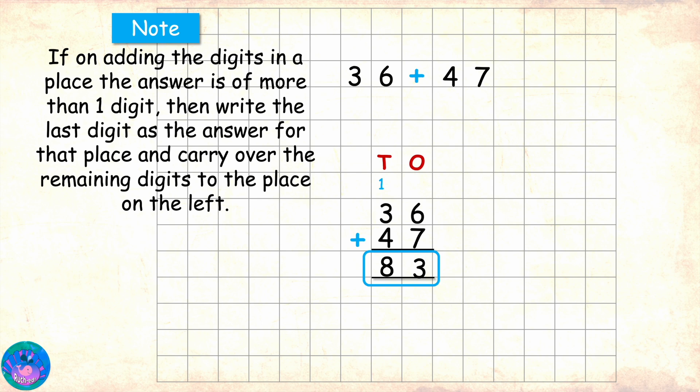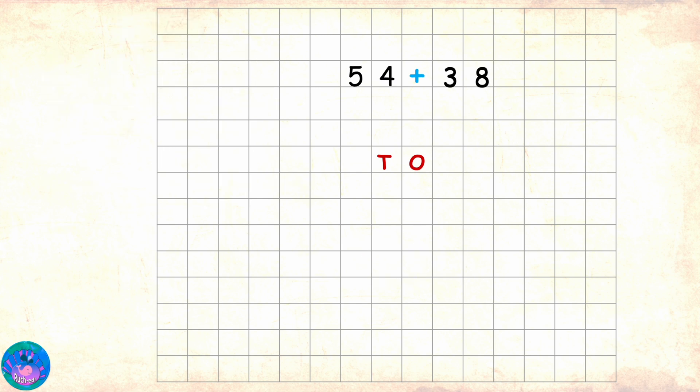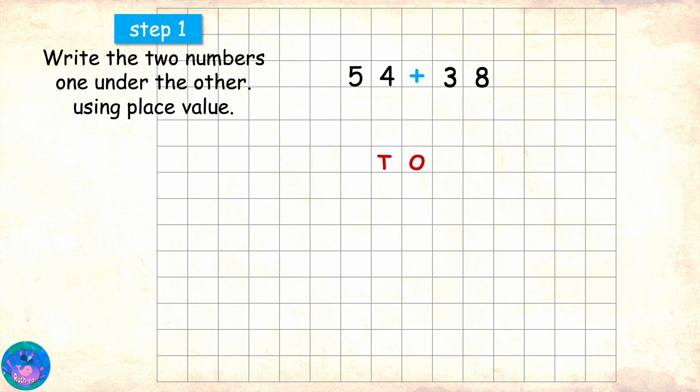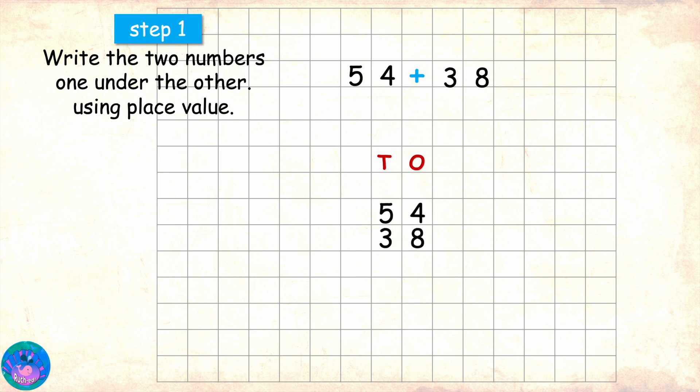That's right, Miss R. I need to practice. Sure. You can add 54 and 38. Okay, I will write the numbers one under the other. Here comes 54 and 38. Now, I will write the plus sign before the second number and mark the area of our answer.